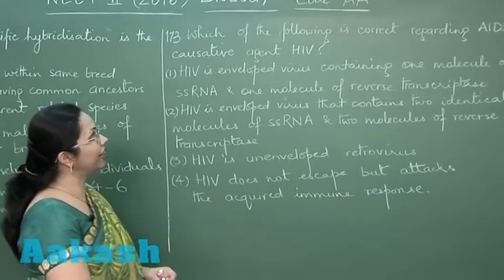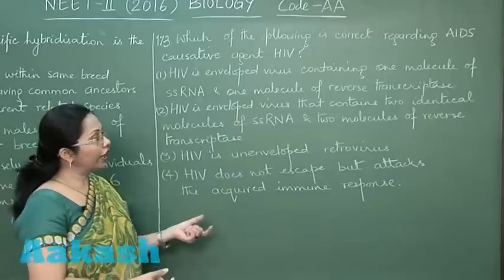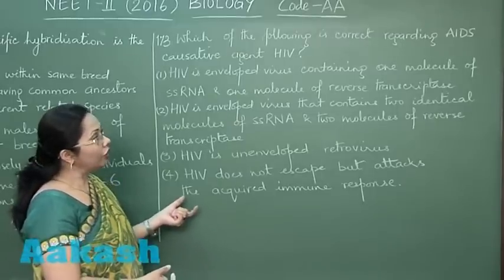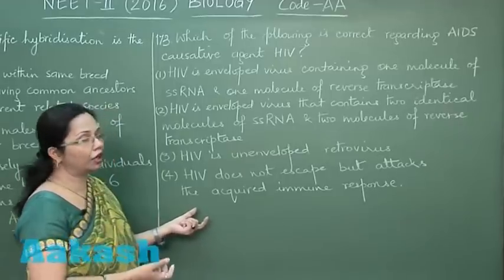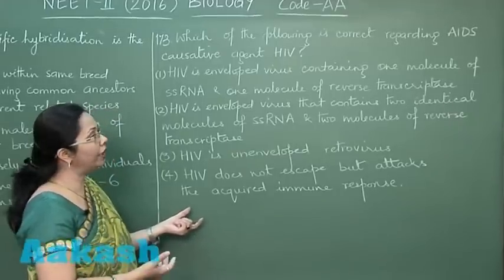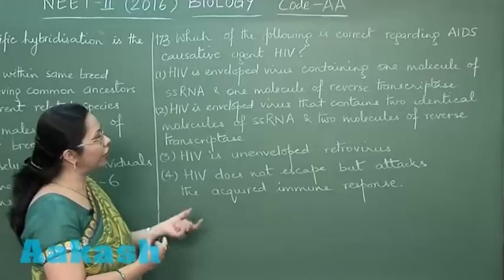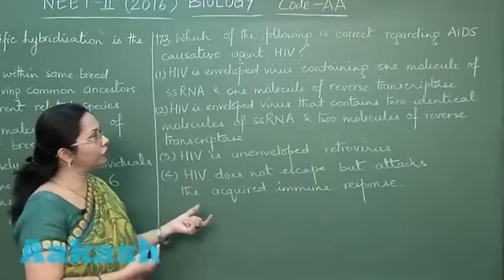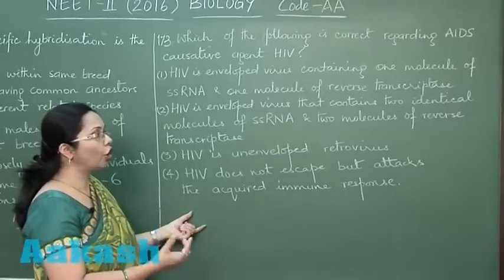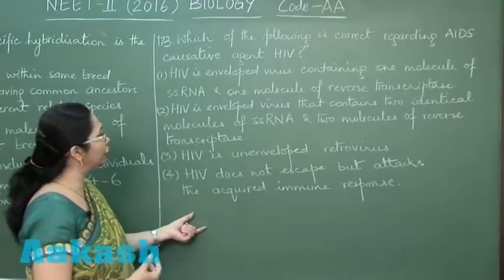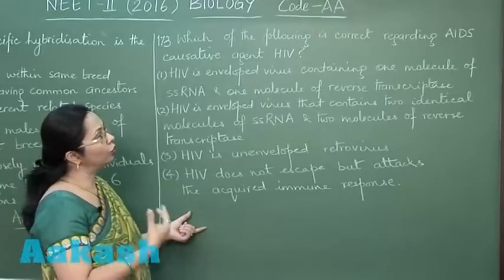In question 173, we have to find what is correct regarding the AIDS causative agent, HIV. HIV is an enveloped virus in which the capsid is enclosed within a phospholipid bilayer that has certain glycoproteins in it. Within it, there are two copies of single-stranded RNA, and each RNA is associated with a molecule of reverse transcriptase enzyme.